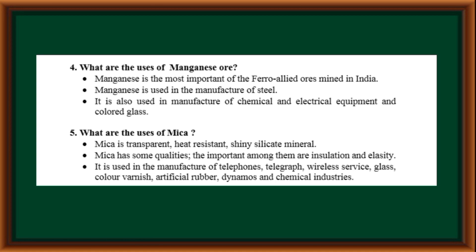What are the uses of mica? Mica is a transparent, heat-resistant, shiny silicate mineral. Its important qualities include insulation and elasticity. It is used in the manufacture of telephones, telegraph, wireless service, glass, color varnish, artificial rubber, dynamos, and chemical industries.